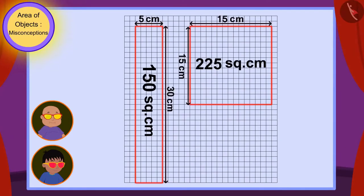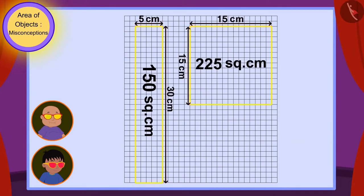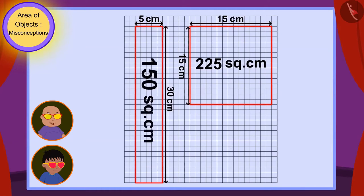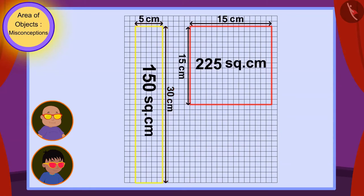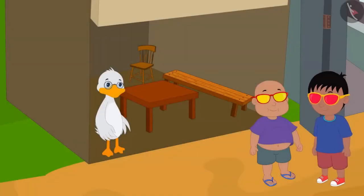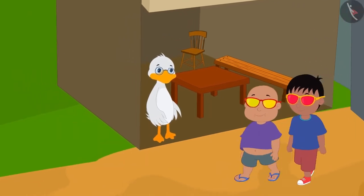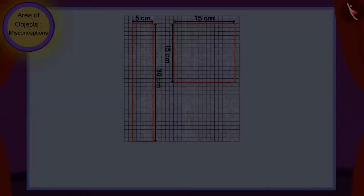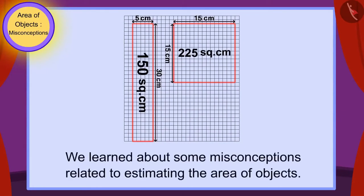Raju and Bablu also found the area of the surfaces of both tables. The area of the rectangular table is 150 square centimeters and the area of the square-shaped table is 225 square centimeters. So, even though the measurement of the longest edge of the rectangular table is bigger than the square-shaped table, the square-shaped table is bigger than the rectangle-shaped table. Raju understood his mistake. Children, in this video we learned about some misconceptions related to estimating the area of objects.